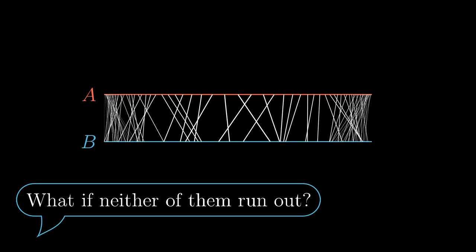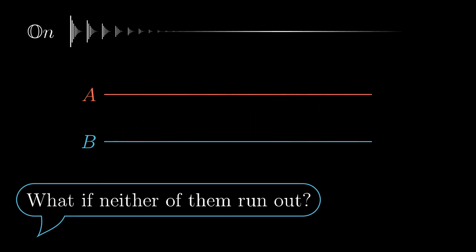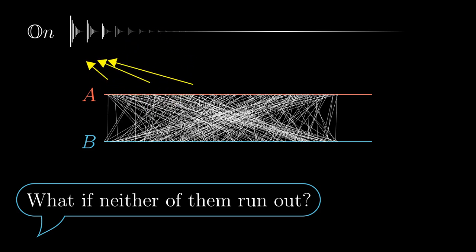To finish the proof we must show there is no other option. To obtain a contradiction, let us assume that we have used all the ordinal numbers. The class of all ordinal numbers is denoted by On. To every ordinal number we have assigned a new edge of the partial matching. We can see this in the opposite way: we have assigned all ordinal numbers to the edges of the partial matching.